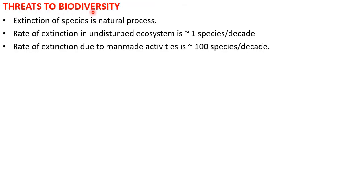Next, we will talk about threats to biodiversity. Extinction of species is a natural process. The rate of extinction in an undisturbed ecosystem is around one species per decade. This is a normal, ideal ecosystem with no human activity — one species goes extinct in about 100 years.